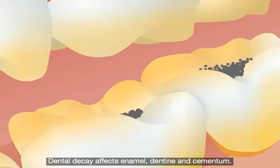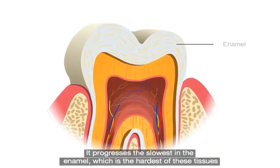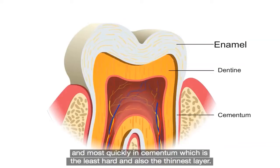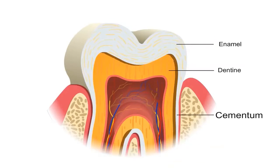Dental decay affects enamel, dentine, and cementum. It progresses the slowest in the enamel, which is the hardest of these tissues, and most quickly in cementum, which is the least hard and also the thinnest layer.